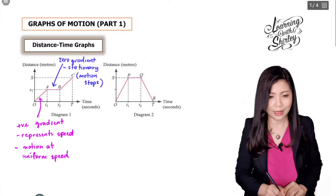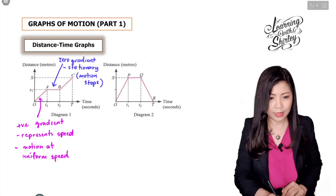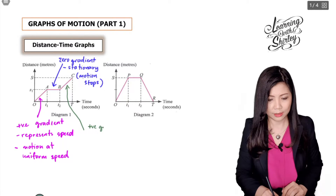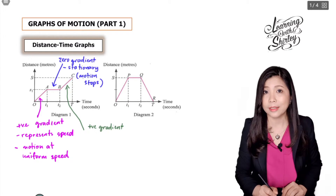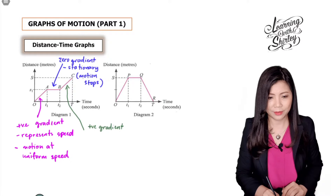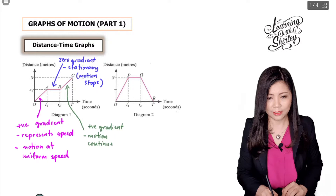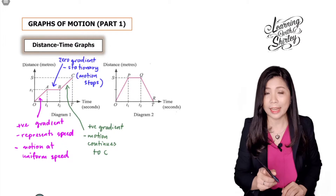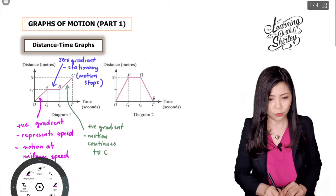Now let's look at line BC. BC shows a positive gradient, which means that the motion continues to C.